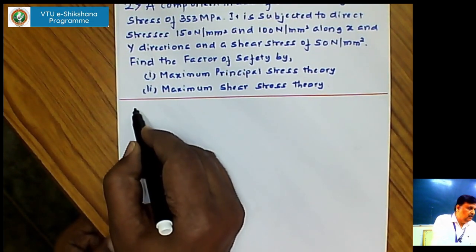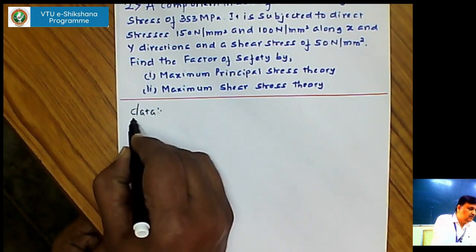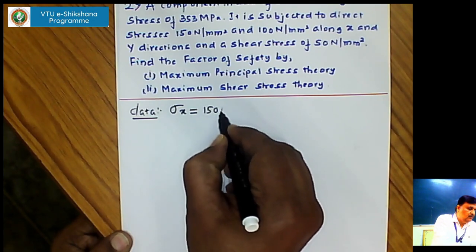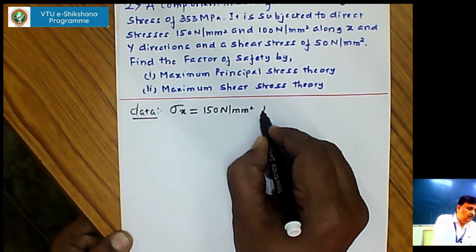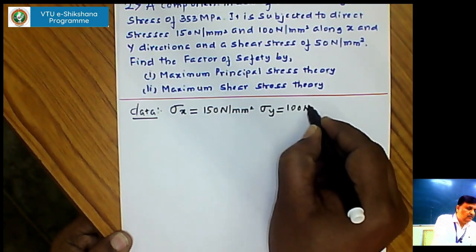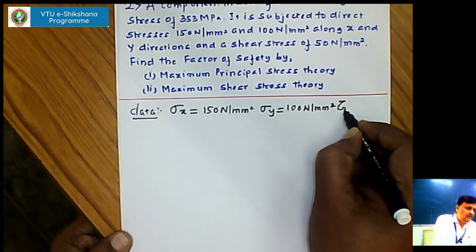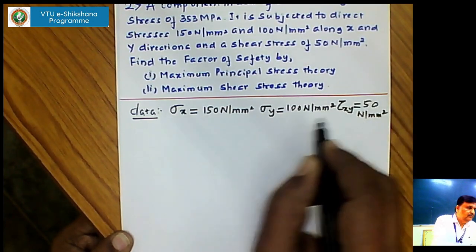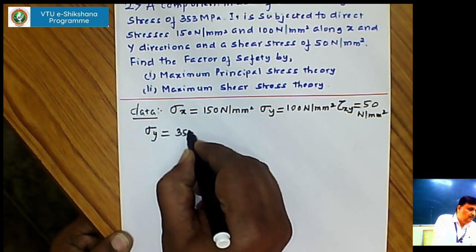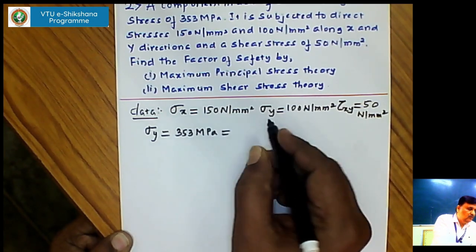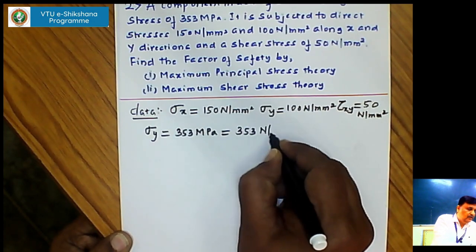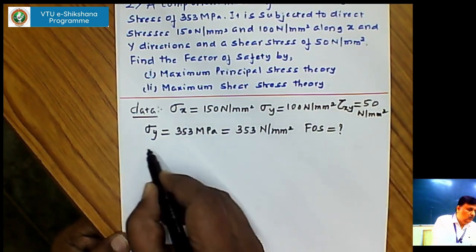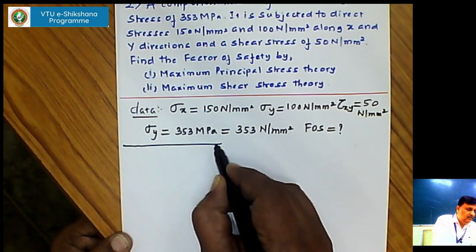We will write the given data. The direct stress acting along X direction is 150 N/mm², the direct stress acting along Y direction is 100 N/mm², and the shear stress acting along the XY plane is 50 N/mm². The yield stress is given as 353 MPa, and since 1 MPa equals 1 N/mm², the yield stress is 353 N/mm². We need to find the factor of safety according to maximum principal stress theory and maximum shear stress theory.